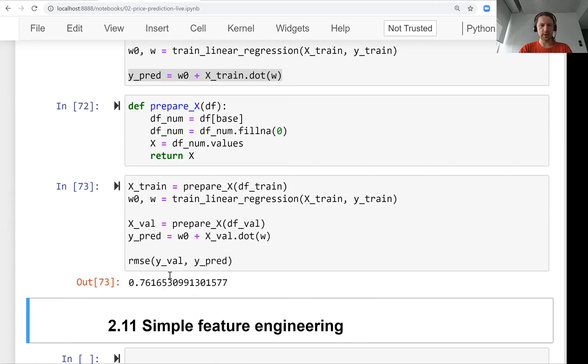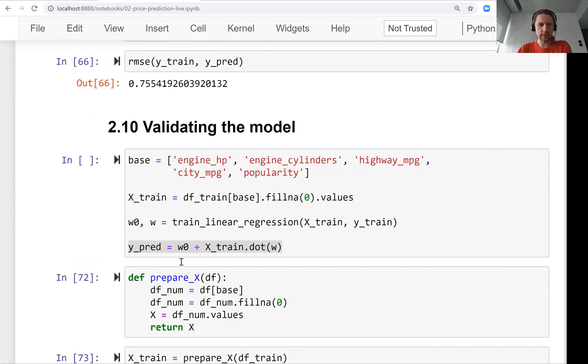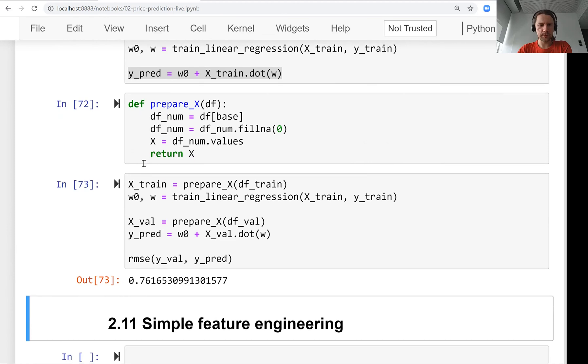And it gives us the root mean squared error. So if you see, this is pretty similar to what we had.